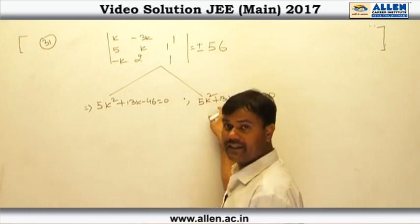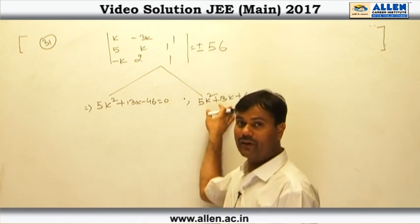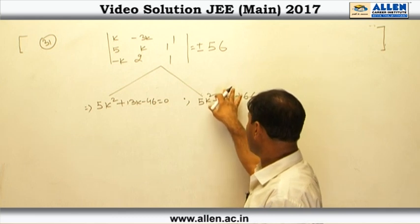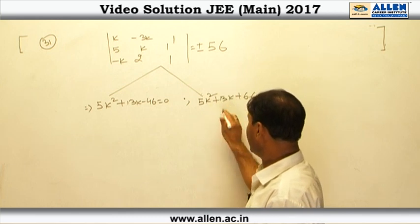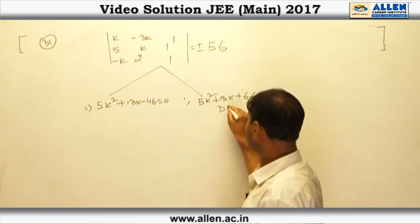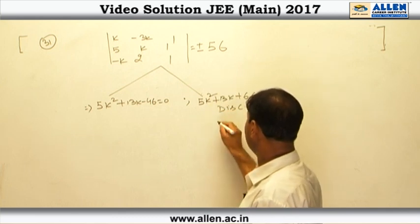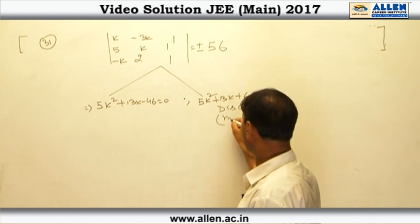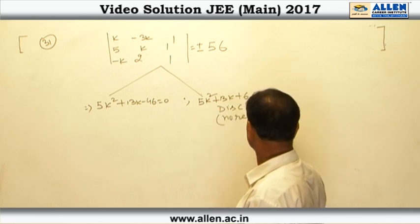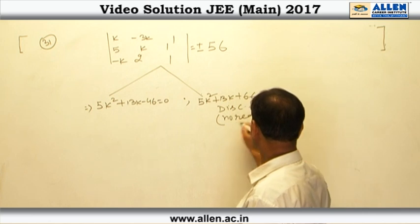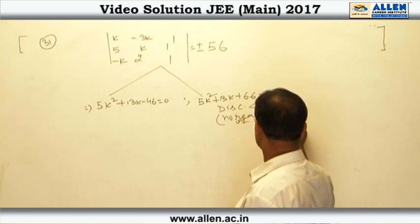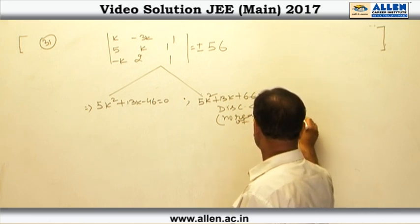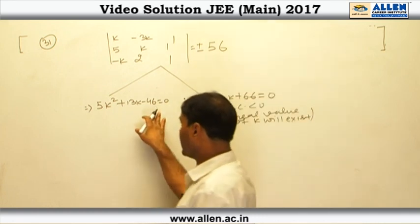We can see that the second quadratic in K will have its discriminant less than 0, so clearly from this quadratic no real value of K will exist. Therefore we continue with the first quadratic.